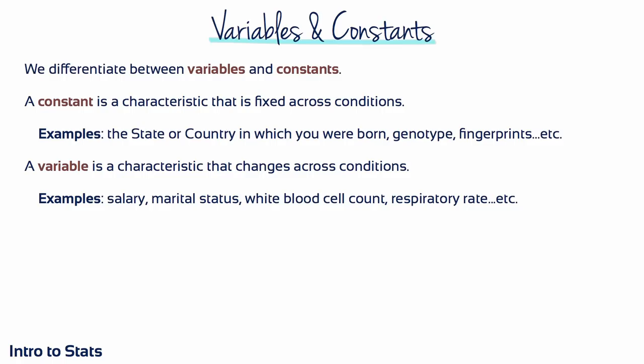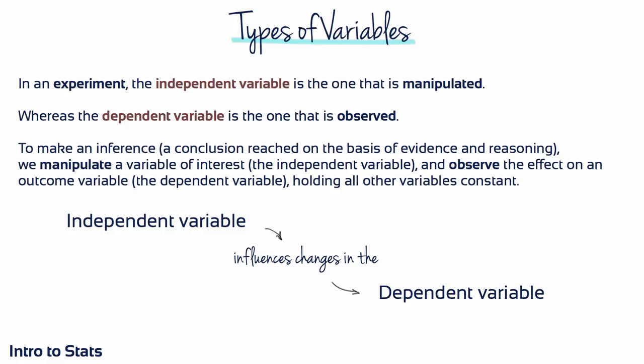Researchers are typically interested in specific characteristics of individuals in the population or sample, or in outside factors that may influence those individuals. Something that can change or have different values is called a variable. Constants are characteristics that are fixed for each individual and cannot change. Two types of variable necessary for good research are independent variables and dependent variables. The variable manipulated by the experimenter is called the independent variable; the dependent variable is the one observed to assess the effect of the independent variable.